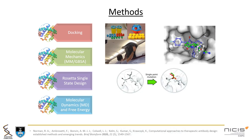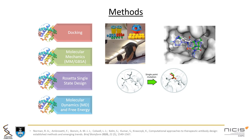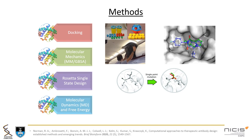Based on these MMGBSA values, structures which bind the cancer-associated ligand would be subjected to single state design protocols. This process allows us to optimize the binding of an antibody to a specific antigen by sampling random mutations and determining if they are beneficial to binding or not by using an energy function.